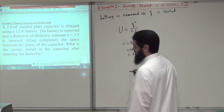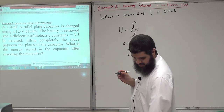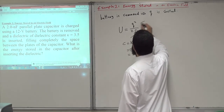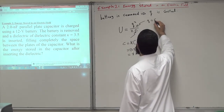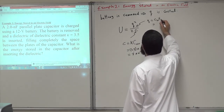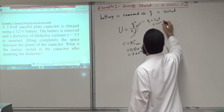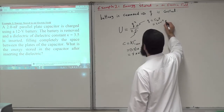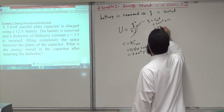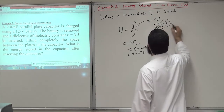We need to calculate the charge Q. Q equals C-air multiplied by V, which is 2 × 10⁻⁹ multiplied by 12 volts, giving Q = 24 × 10⁻⁹ coulombs. This is the charge, which remains constant after the battery is removed.